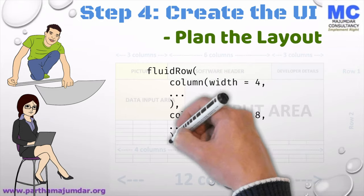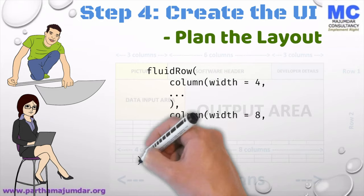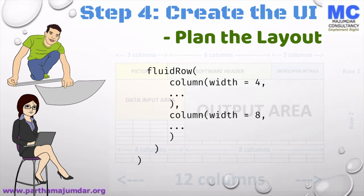Now we create the second row as per the UI layout that we designed. Here we have two columns: one is of width four and one is of width eight. Within each of these columns, we can place any number of controls to be displayed within that section of the layout. So the function fluidRow creates a row within the layout and the function column creates a column within the layout.